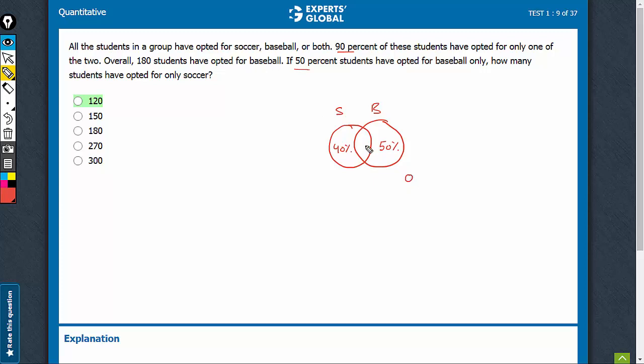Outside it is zero. So this becomes 10%. And now, 180 have opted for baseball. So 60% have opted for baseball, which is 180. So total number of people in the group is 180 upon 0.6, which is 300.